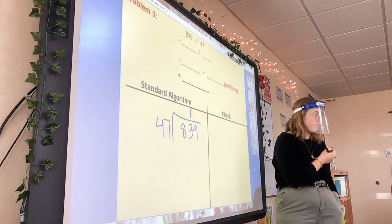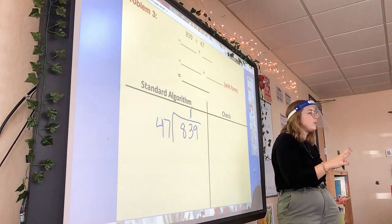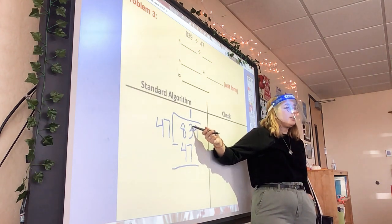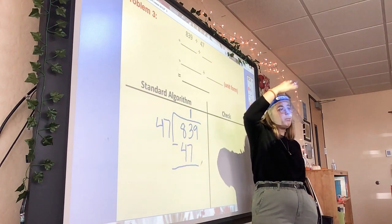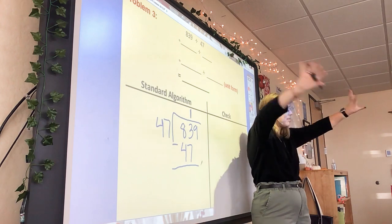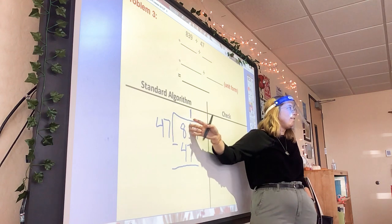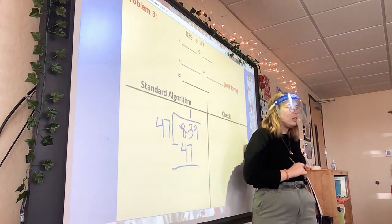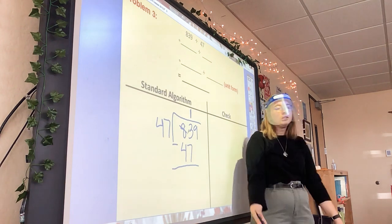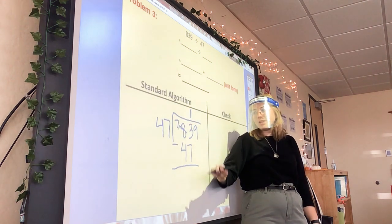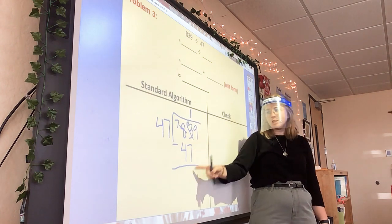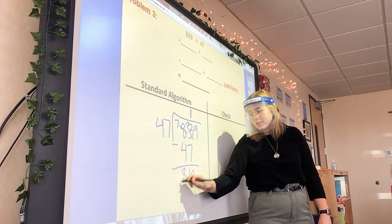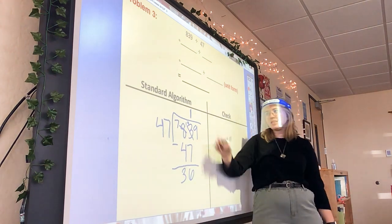Next step is to subtract. Can I take 7 away from 3? No — I've got to borrow from my tens place. I take 1 away from my tens place, giving me 7 tens. That 1 explodes into 10 and adds over here — 13 minus 7. What is 13 minus 7? 6. And what is 7 minus 4? 3. So I have 36.